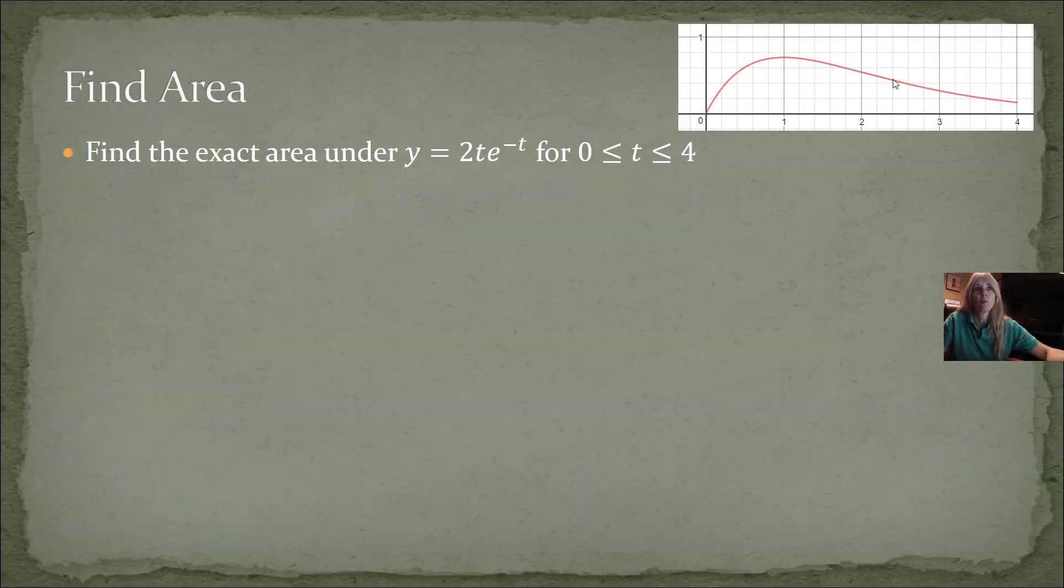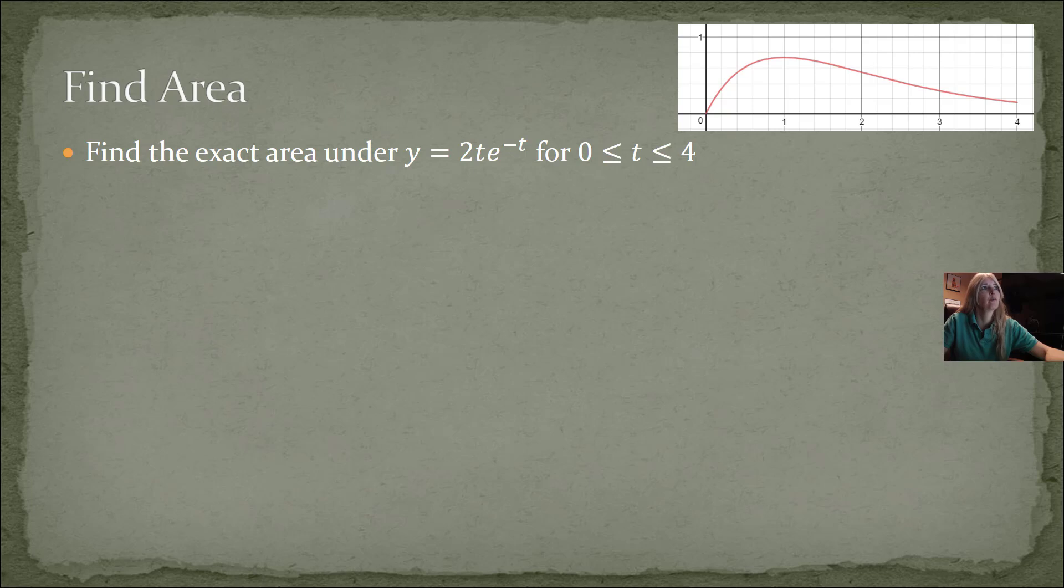So as you can see here, I want to find the area under this curve from 0 to 4. So let's write this out, what it actually looks like. So I would be going from 0 to 4 of 2t e to the negative t dt.